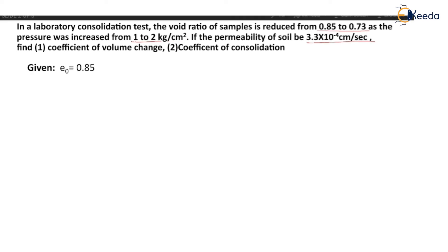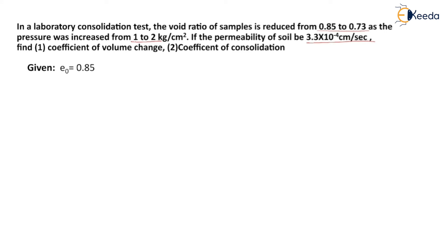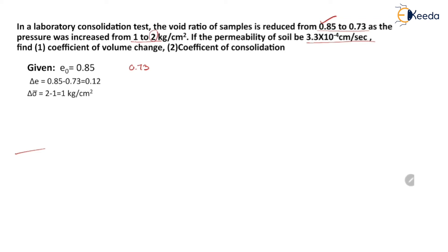Let us summarize the given data. The initial void ratio E0 is 0.85. The final void ratio is 0.73. So the change in void ratio delta E is 0.85 minus 0.73, which equals 0.12. The increase in effective pressure delta sigma bar is 2 minus 1, which is 1 kg per cm². The permeability K is 3.3 × 10⁻⁴ cm per second.